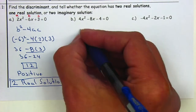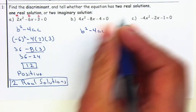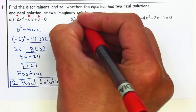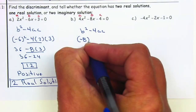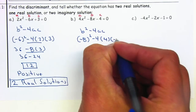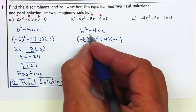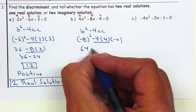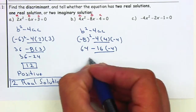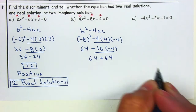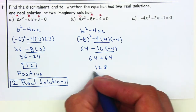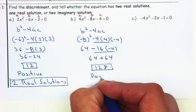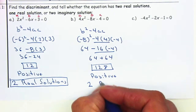For letter B, we go through the same process — using the discriminant to determine the number and type of solutions. A is 4, B is negative 8, and C is negative 4. So b squared minus 4ac: negative 8 squared is positive 64, minus 4 times 4 times negative 4, which gives 64 plus 64, equaling 128. Since 128 is positive, that means we have two real solutions.